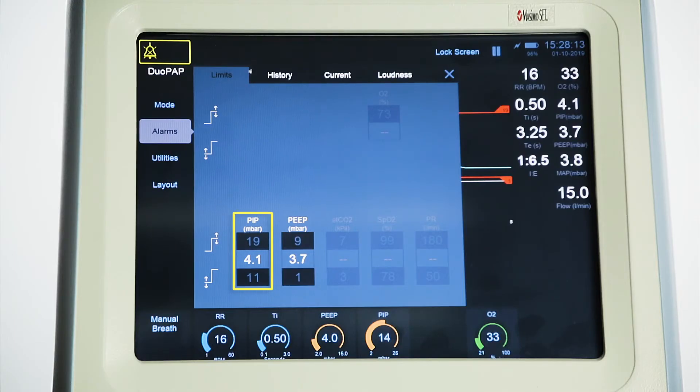Alarms include high and low PIP, high and low PEEP, which are auto-set and can be user-adjusted.